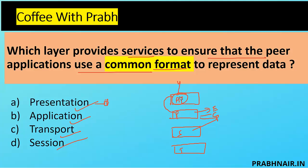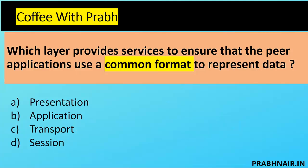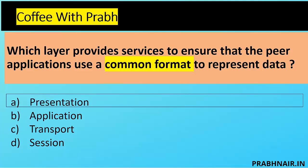Option B, Application Layer: the user interacts with it but no formatting happens there — it just passes information to Presentation Layer. In Transport Layer, data is divided into segments — no formatting. Session Layer is only used to establish a session. So the answer is A — Presentation Layer — because it is responsible for presenting data to the lower layer in a format involving compression and encryption.